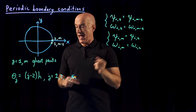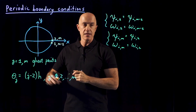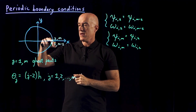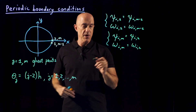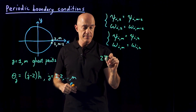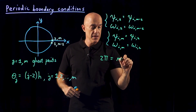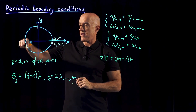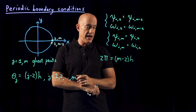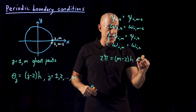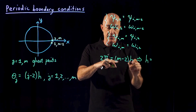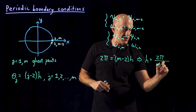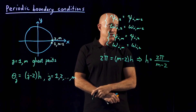What is our grid spacing h? We know we have m points in theta, and when we go around m points we should get to 2π. So 2π must equal (m−2)×h, since we start one point below. When we go around m points, we need to end up at 2π. So the grid spacing in this case is 2π — no longer π — but 2π divided by the number of grid points in theta minus 2.